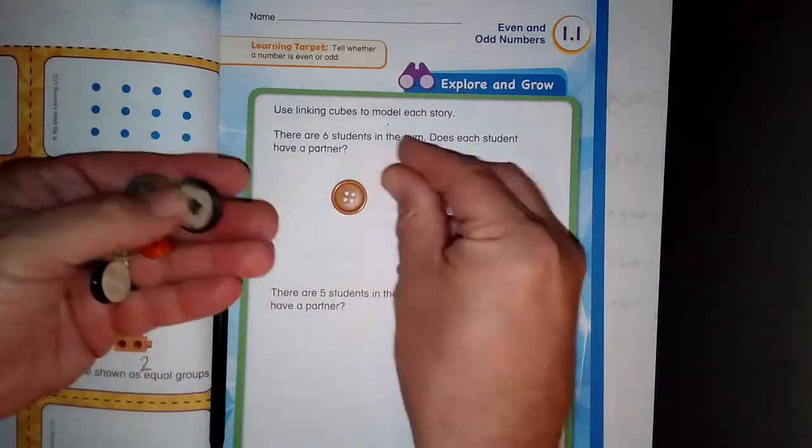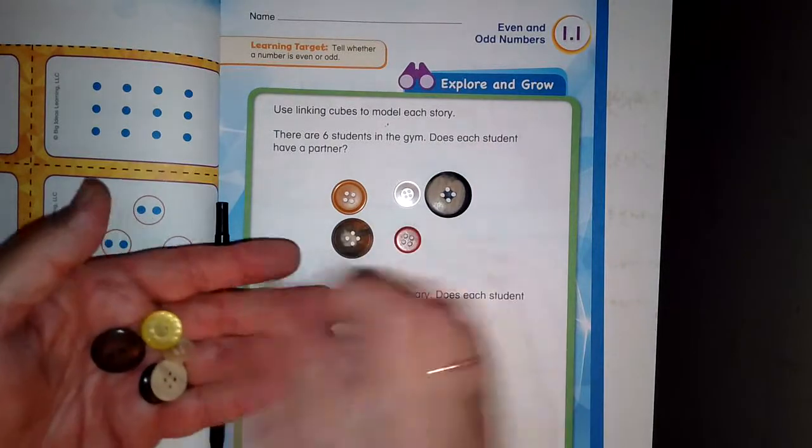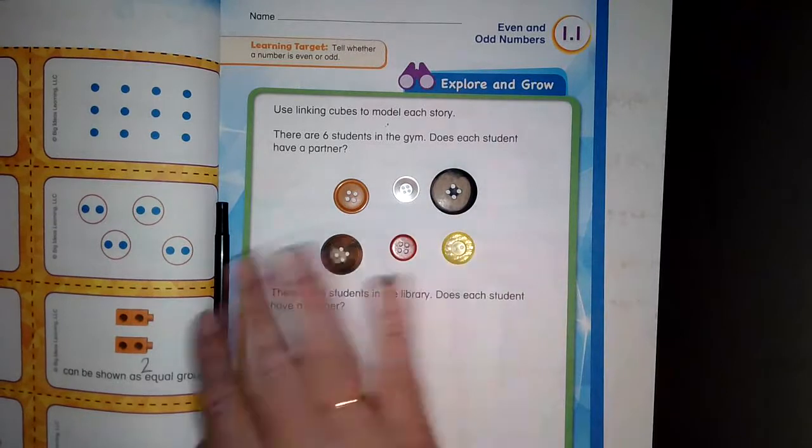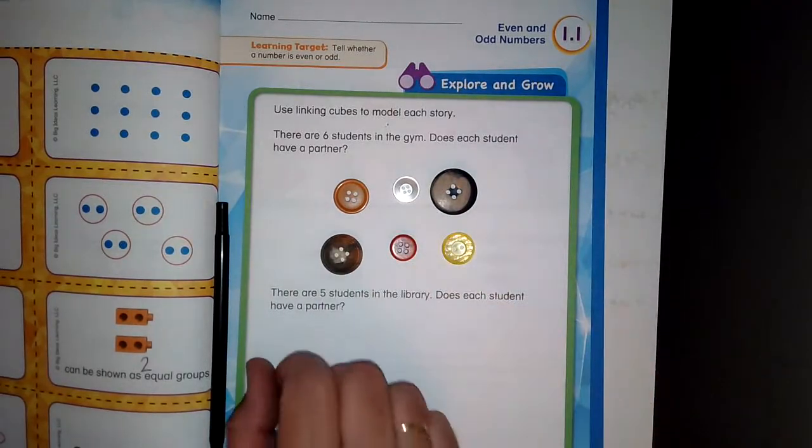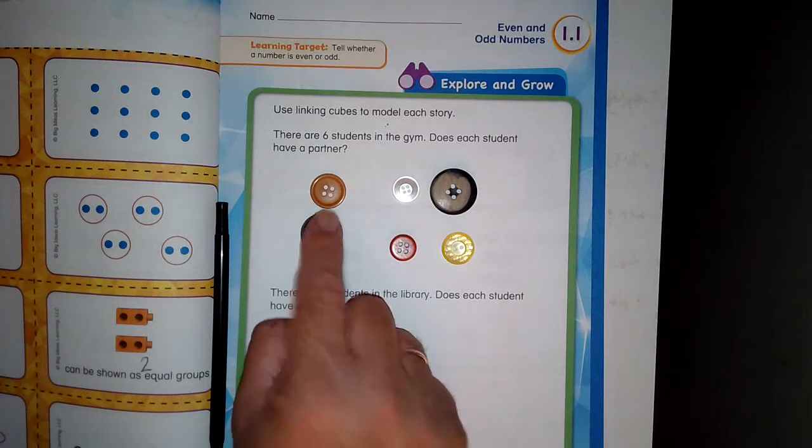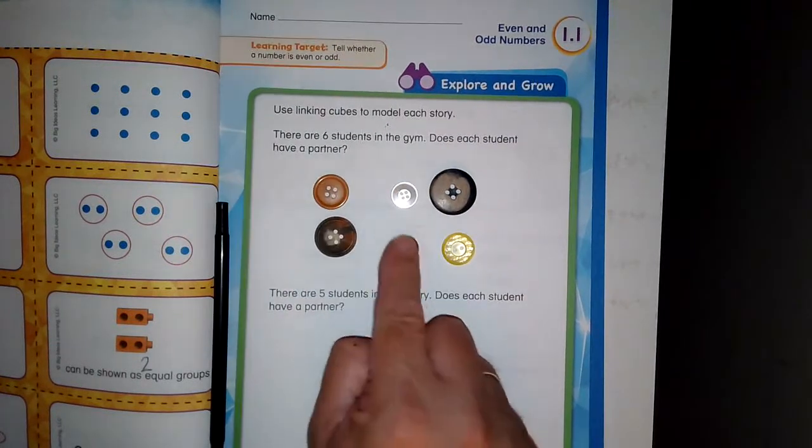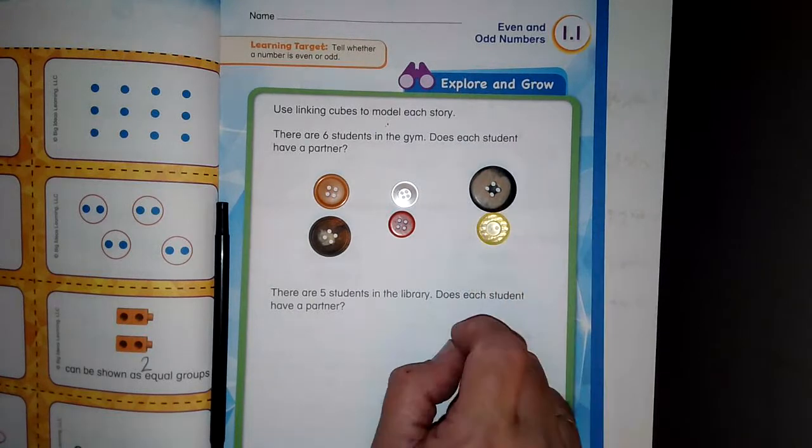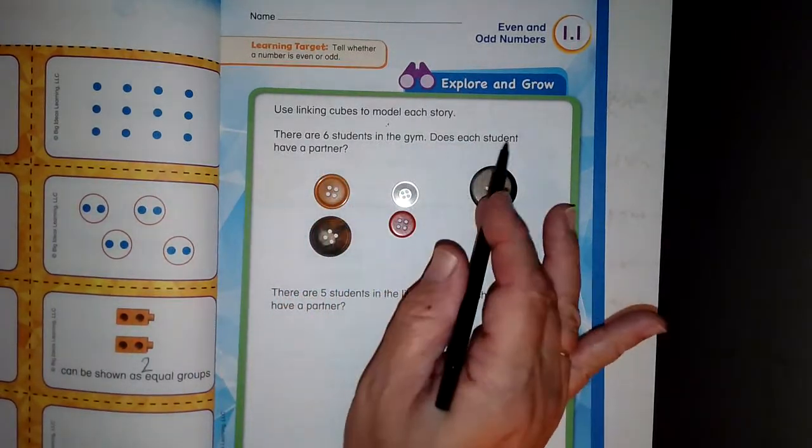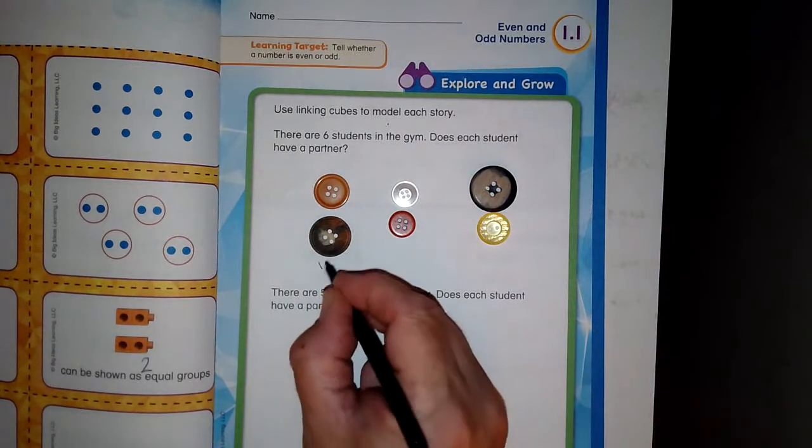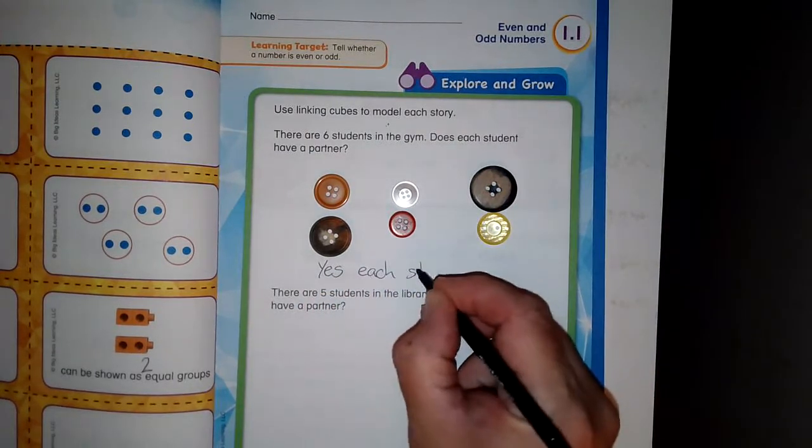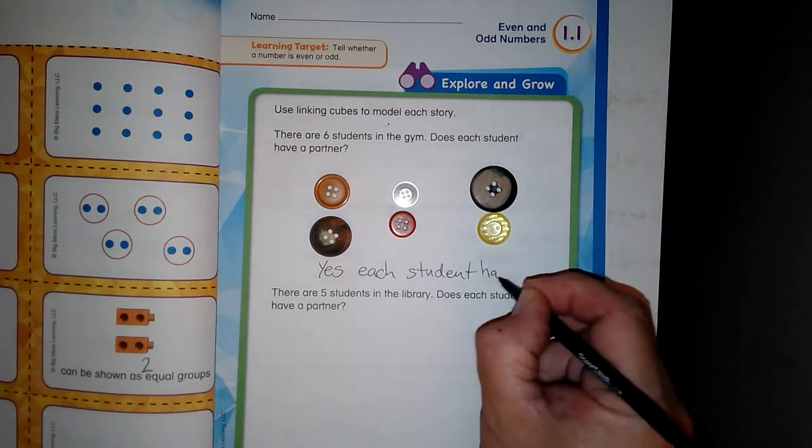So I'm going to put one, two, three, four, five, and six. Do they each have to be the same? Absolutely not. But I want to see will each one have a partner? Let's see. This one and this one have a partner. This one and this one have a partner. This one and this one has a partner. So there are six students in the gym. Does each student have a partner? Yes. Each student has a partner.